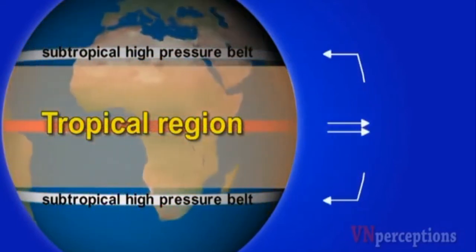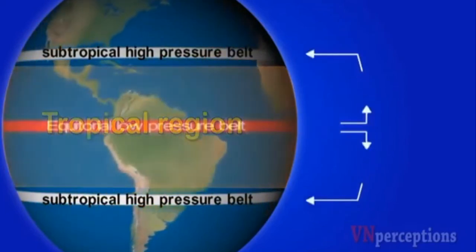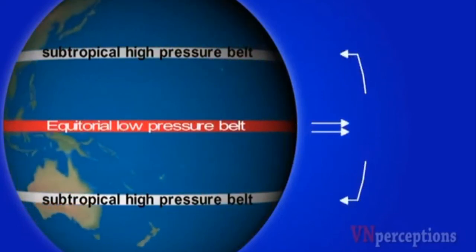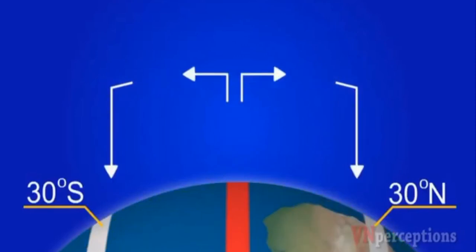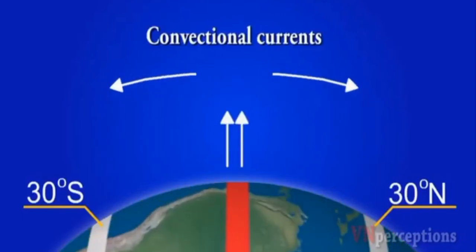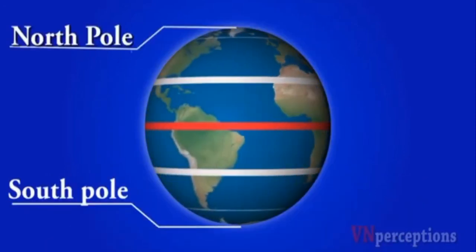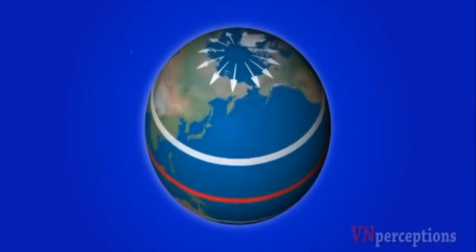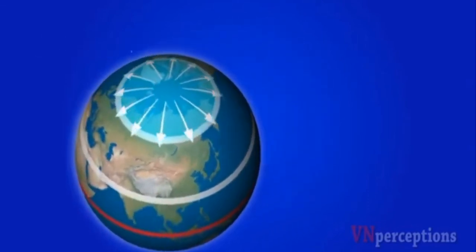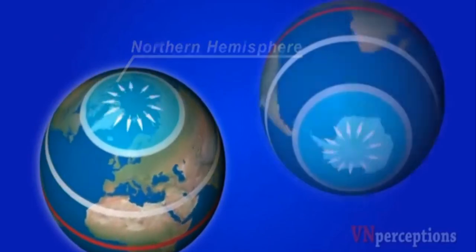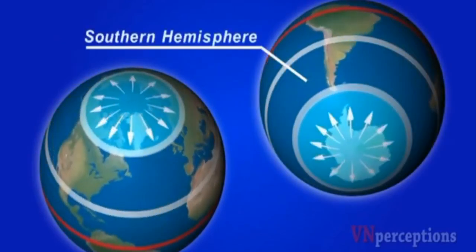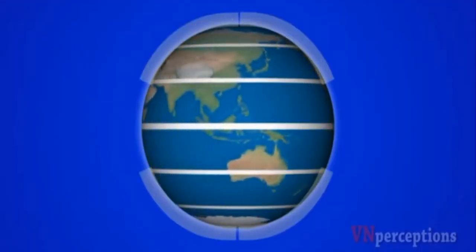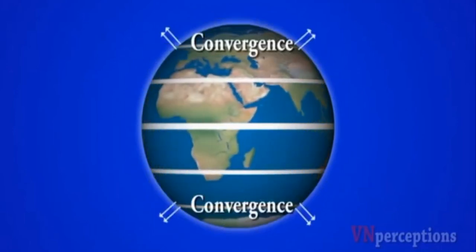The air spreads out and starts moving in the southern and northern directions. As the air moves, it becomes denser and sinks down to the surface at around 30 degrees north and south. This sinking air is cool, forming high pressure systems called subtropical high pressure belts — lying outside but adjoining the tropical region. The sinking air then moves towards north and south, developing convectional currents.